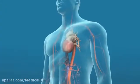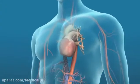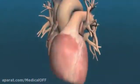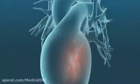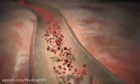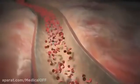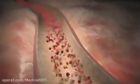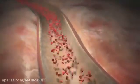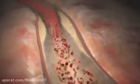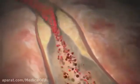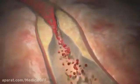Your heart receives oxygen and nutrients from blood flowing through your coronary arteries. Fatty deposits, called atherosclerotic plaque, can build up inside these arteries, narrowing the passageway and interfering with blood flow to your heart muscle.